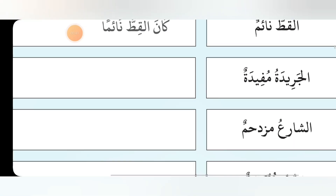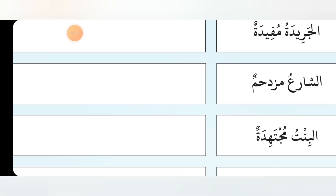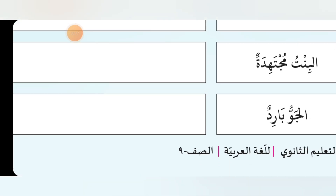The next one: Ash-Shariu Muzdahiman becomes Kana Ash-Shariu Muzdahiman. Then Al-Bintu Mujtahidatun becomes Kanat Al-Bintu Mujtahidatan — here also Bintu is female so we use female Kana, which is Kanat. Al-Jawwu Baridun becomes Kana Al-Jawwu Baridun.